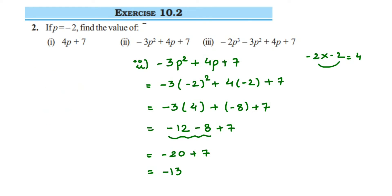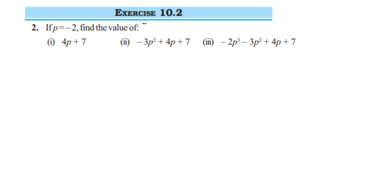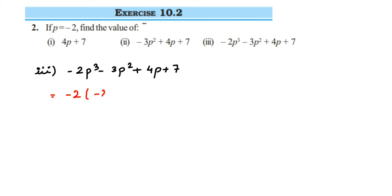So I am going to erase everything here. This is the last question. In the third question, we have a very big expression: minus 2p³ minus 3p² + 4p + 7. In place of p, substitute minus 2. So this is equal to minus 2 into (minus 2)³, minus 3 in place of p put minus 2, so (minus 2)² plus 4 into minus 2 plus 7.